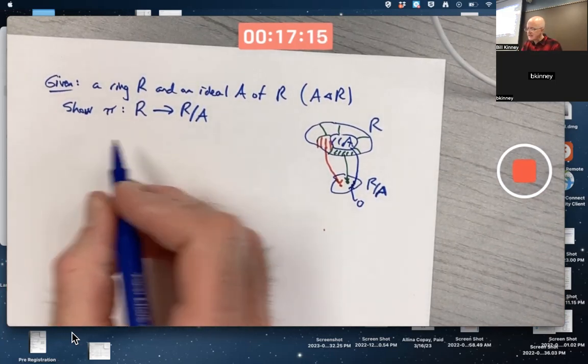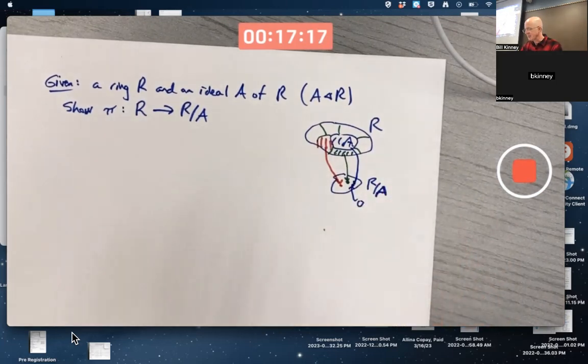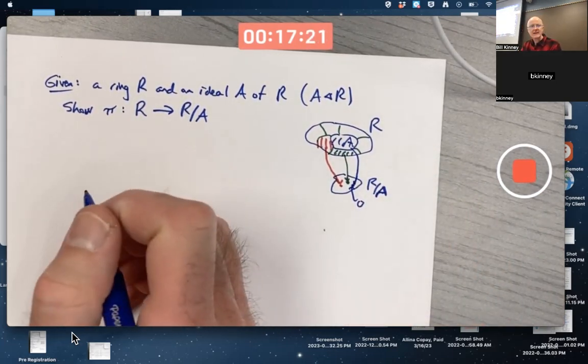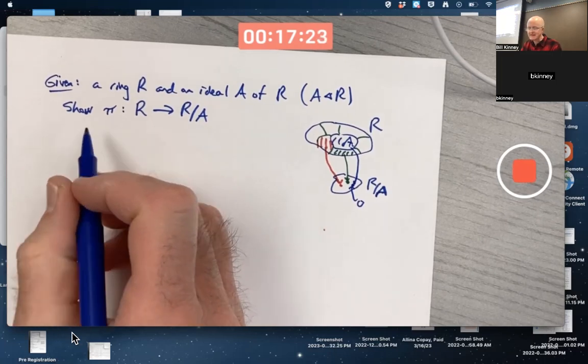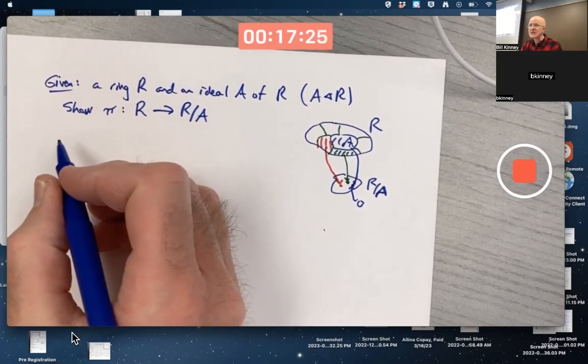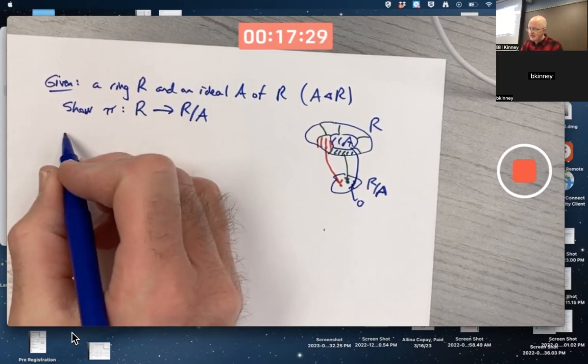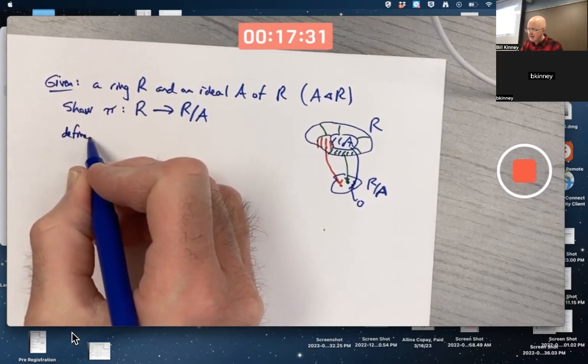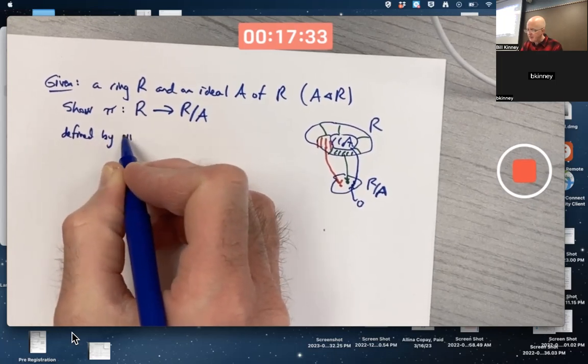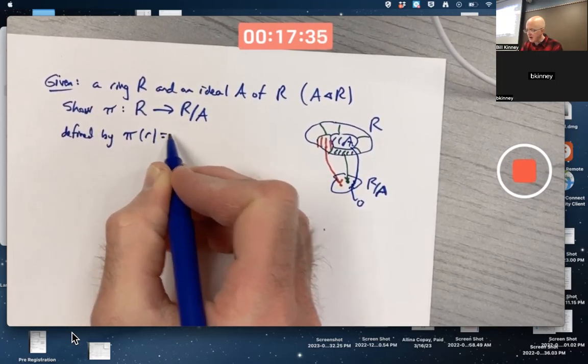Maybe this coset right here gets mapped to this point right here. A itself would get mapped to the zero element. Whatever A gets mapped to, it's going to be the zero of the factoring. A equals zero plus A. We're going to show this is kind of like a projection. It's like projecting something bigger into something smaller. That's the origin of using the letter pi here. It has nothing to do with the number pi. Just that pi starts with P, just like projection starts with P.